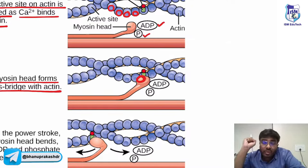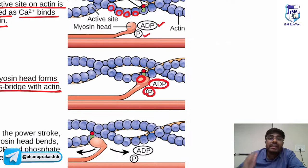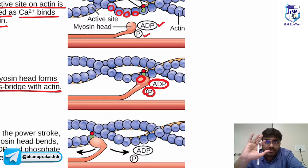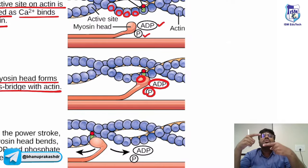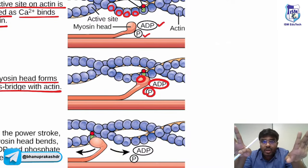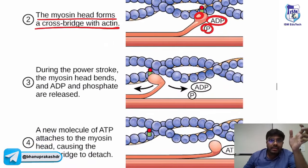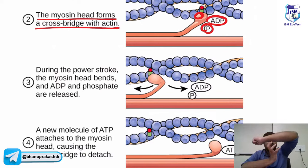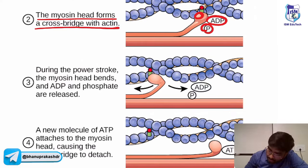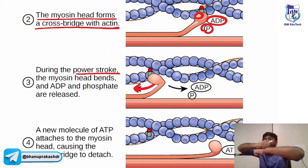The myosin head goes and binds with the active site — still carrying ADP and inorganic phosphate. Then cross bridge formation occurs. After cross bridge formation, the myosin head bends and pulls — this is called the power stroke — the myosin head is pulling the thin filament over the thick filament.